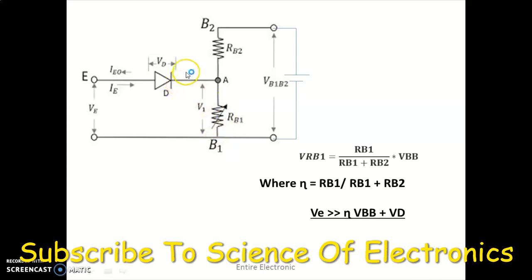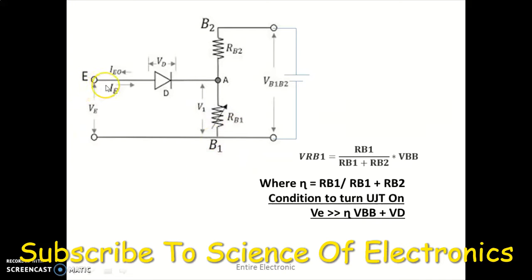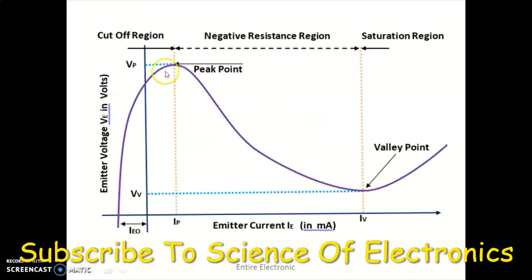Once we overcome that voltage drop across RB1 and the diode, the UJT gets turned on and a large current flows from the Emitter to Base 1. Initially, the current from Base 2 to Base 1 also adds with the emitter current.